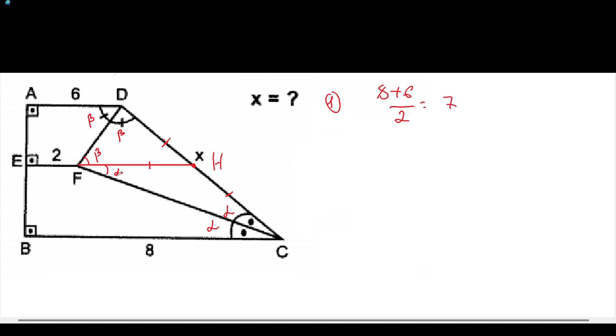And now we can find out the FH line segment, which is 2 plus FH will be equal to 7. Now FH here will be equal to 5. As DH and HC are equal, we have to multiply this by 2 and we will get the answer 10.